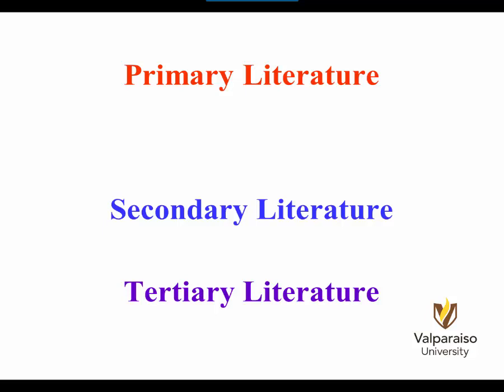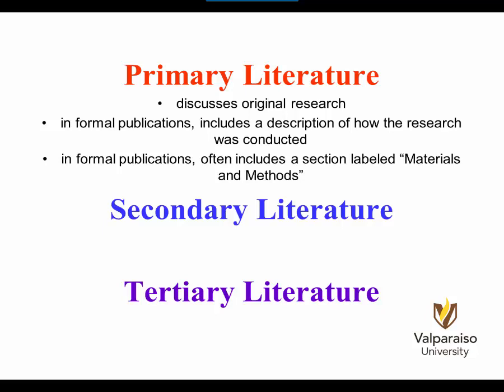The meaning of these terms varies with discipline. In the humanities or law, the primary literature serves as the object of study. For example, in the field of history, the primary literature includes materials written at the time of a past event. In the sciences, the primary literature discusses original research. In a formal publication, primary research can be recognized by the inclusion of a description of how the research was conducted. Usually, but not always, this description falls under the heading materials and methods.